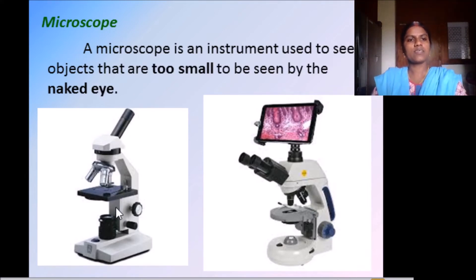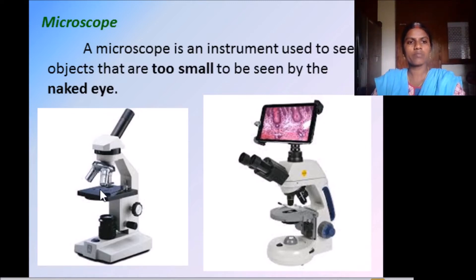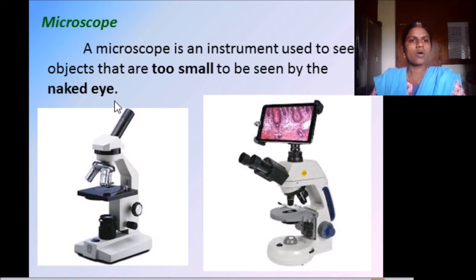This is a microscope — you can see here in the image the types of microscope. The specimen will be placed underneath and it can be viewed through this. Specimen means the sample — it may be a water sample, a droplet of water, or a droplet of soil or contaminated water placed here. A microscope is an instrument used to see objects that are too small to be seen by the naked eye.